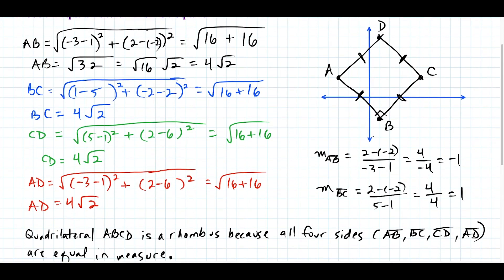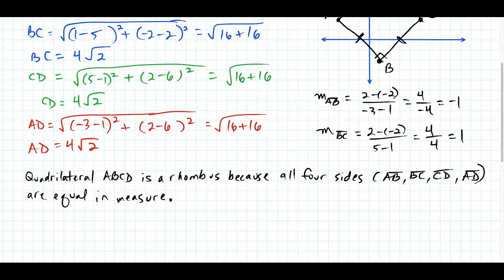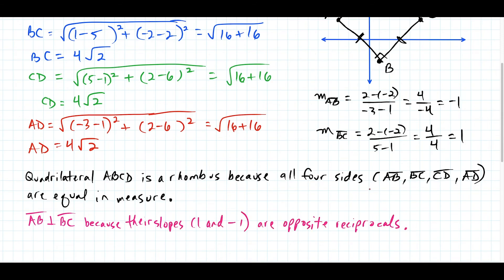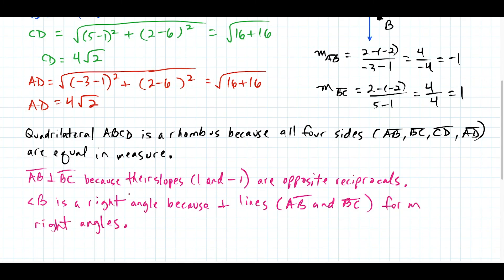So we write out everything we just found: these two lines are perpendicular because their slopes are opposite reciprocals. From here, we establish that angle B is a right angle because perpendicular lines form right angles. Now we have enough information to complete this proof — quadrilateral ABCD is a square because a rhombus with one right angle is a square.